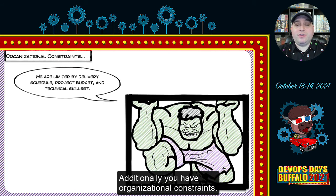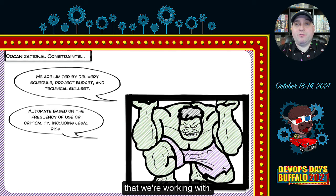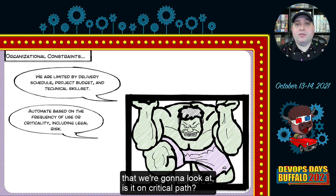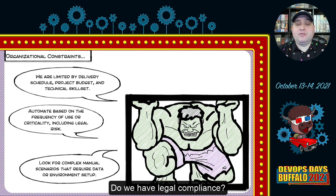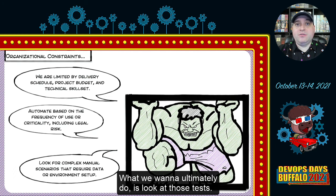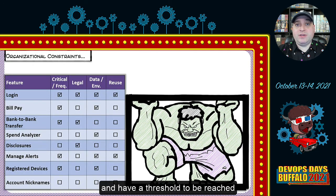Additionally, you have organizational constraints — we're always limited by time, budget, and the technical skill set of the people we're working with. So take the same risk-based approach that Microsoft took: Is it on critical path? Do we have legal compliance considerations? Is there a large amount of data or environmental setup we can automate away? Ultimately, look at the tests that are going to provide the greatest value and establish a threshold to be reached for a test case to be automated and added into your regression suite.